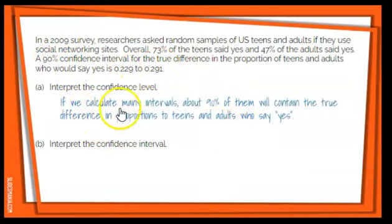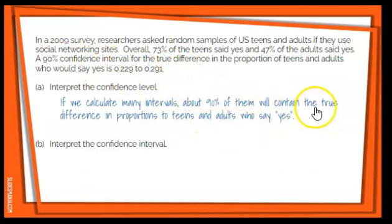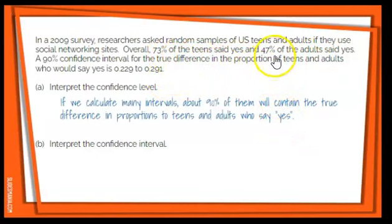Since we don't know a sample size, we don't mention it. If we calculate many intervals, about 90% of them will contain the true difference in proportions of teens and adults who say yes. Notice it's the difference in proportions — we're subtracting these two values to find out what the difference is between teens and adults.